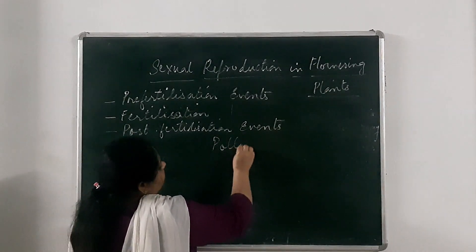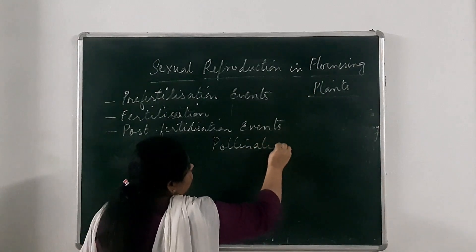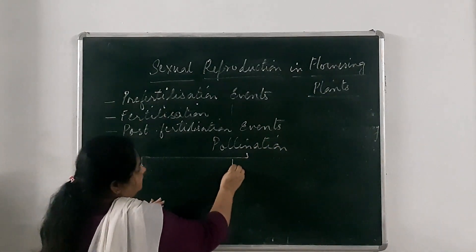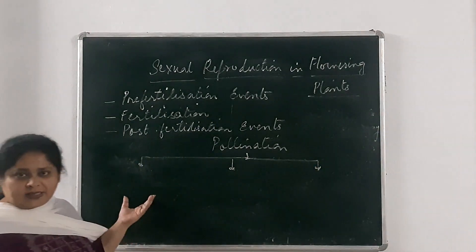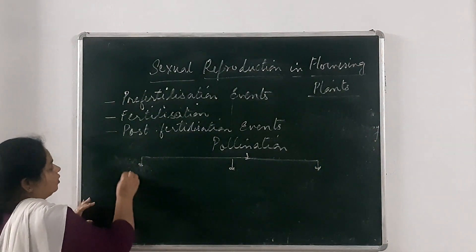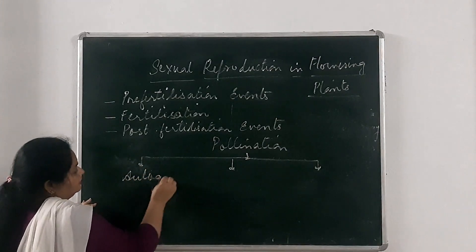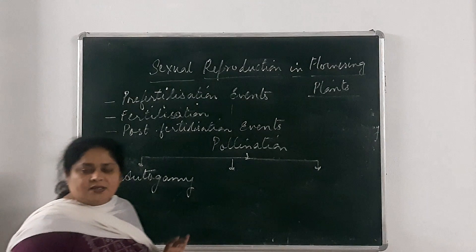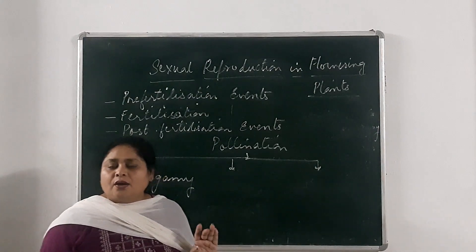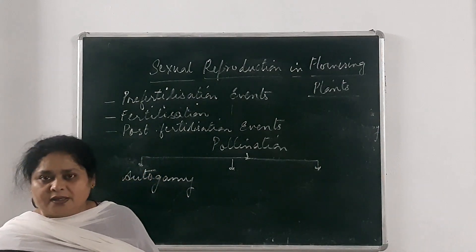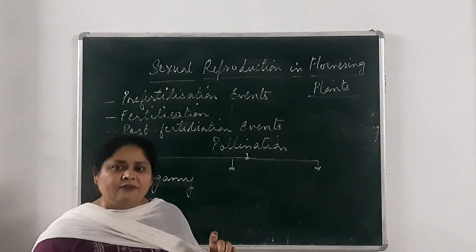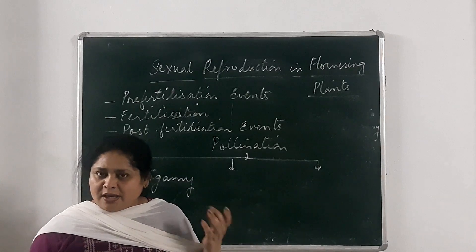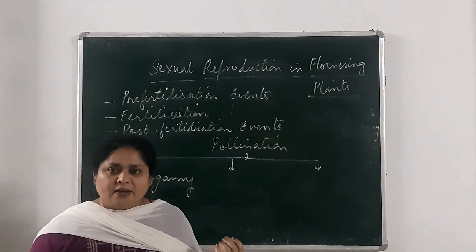Pollination can be categorized into three categories. The first one is autogamy. Autogamy means the transfer of pollen grains within the same flower — that means to the stigma of the same flower. It occurs always in a bisexual flower, and the same flower receives the pollen grains.